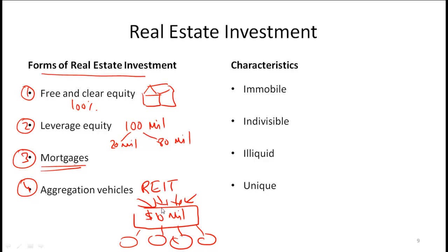So in a sense, investors get diversification across the real estate market. Obviously, different REITs might have different specializations. Some REITs might invest purely in office buildings, others might invest in commercial real estate, others might have a mix. So the specific characteristics of the underlying investment will be defined in the REIT prospectus.